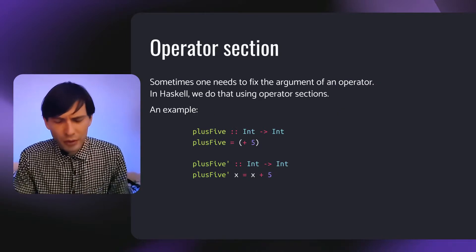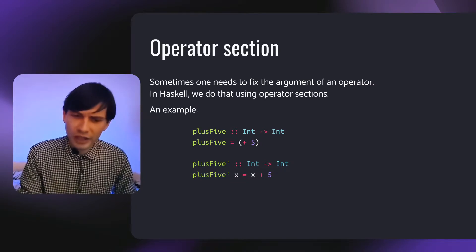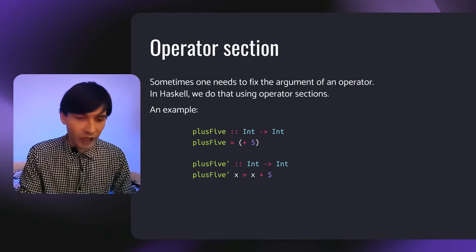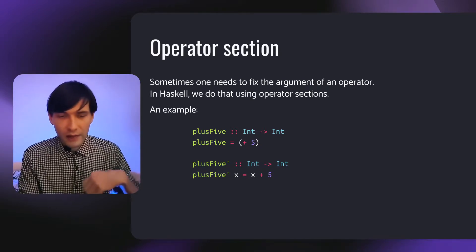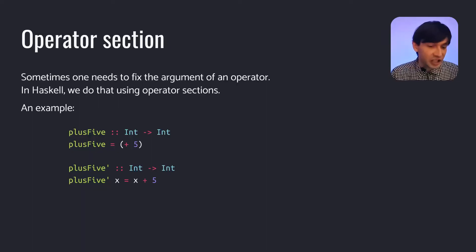The second example is related to operator sections. Sometimes one needs to fix the arguments of an operator and leave the second argument in an arbitrary one. In Haskell we do that using operator sections. Here's an example.